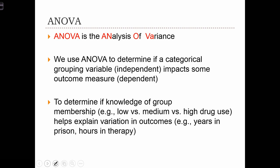ANOVA stands for the Analysis of Variance, and we use ANOVA to determine if a categorical grouping variable, the variable that we'll call the independent variable, impacts some outcome measure that we're going to call the dependent variable.